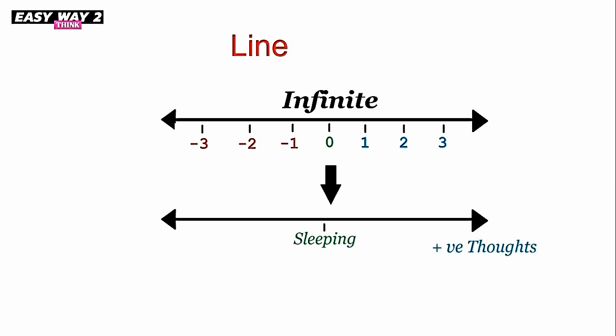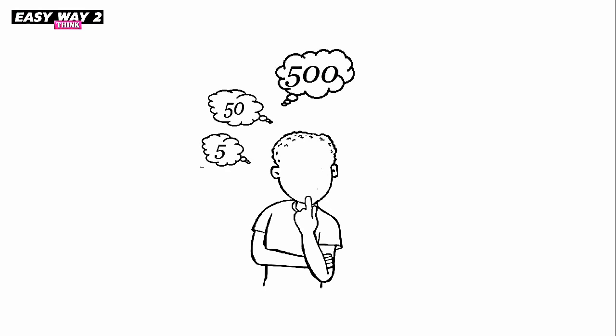On right hand, the positive line comes, that is positive thoughts. Whereas on left hand, the negative thoughts come. So thoughts are equally related with line. Do you know that how many thoughts come in mind in one day? 5, 50, 500, or 5,000? More than 50,000 thoughts come in mind in a common person per day.